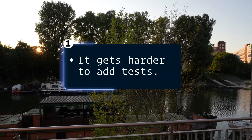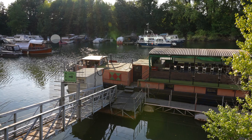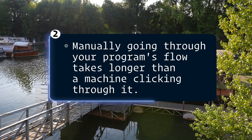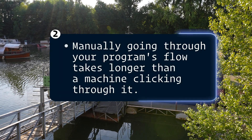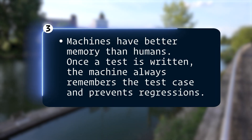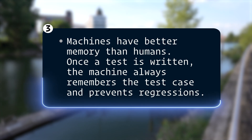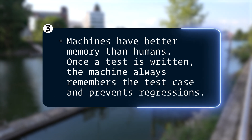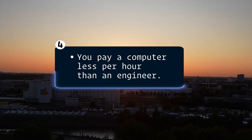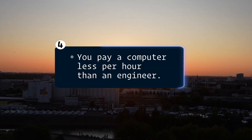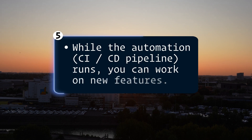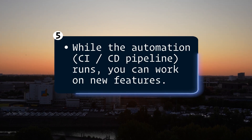First, as your app grows it gets harder to add tests. Manually clicking through a program takes longer than a machine doing it. Machines have better memory than humans — once a test is written, the machine never forgets the test case and prevents regressions. You pay a computer less than an engineer, and while your CI/CD pipeline runs you can already work on new features. Automated tests guarantee program correctness if your tests are good.